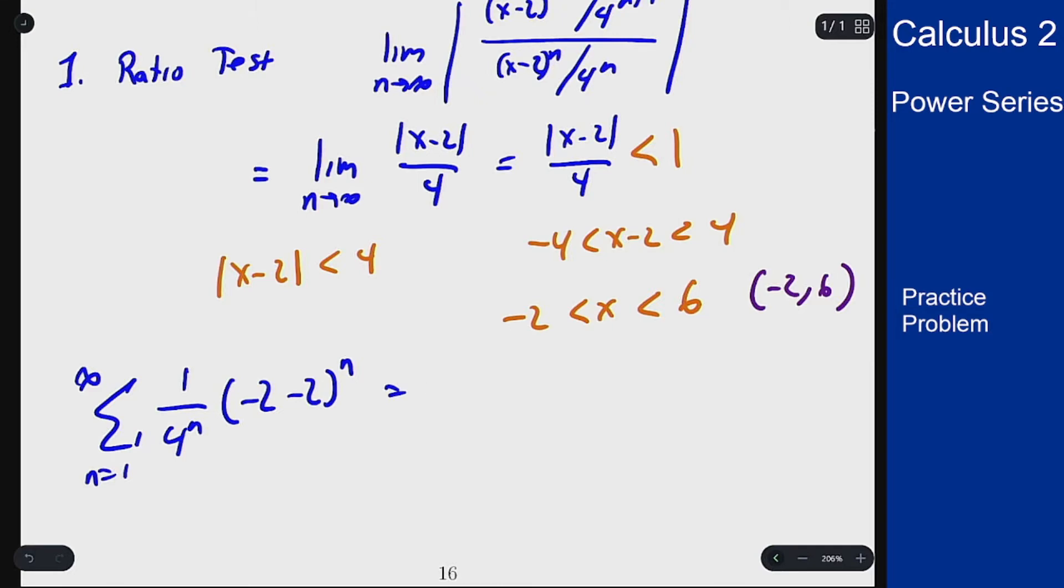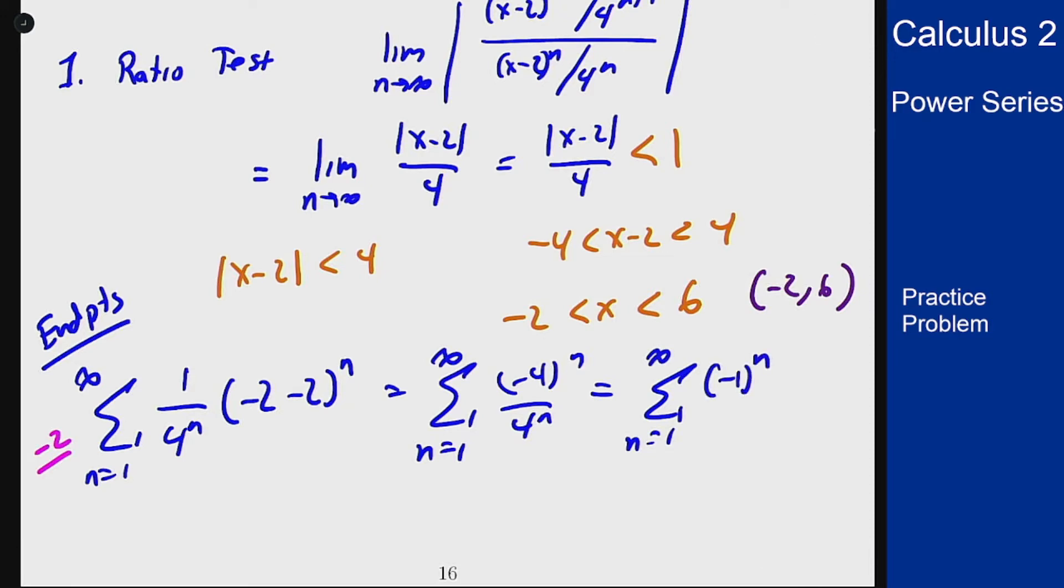This becomes the sum from n=1 to infinity of (-4)^n / 4^n, which is the sum from n=1 to infinity of (-1)^n. This alternates -1, 1, -1, 1... The terms don't go to 0, so this diverges.